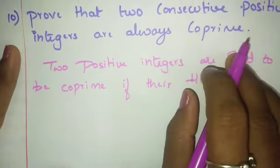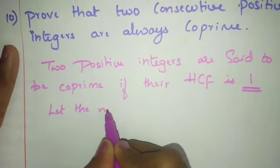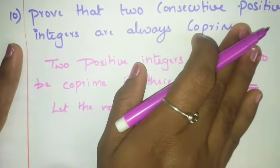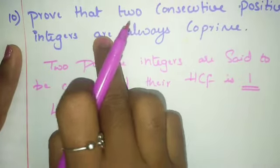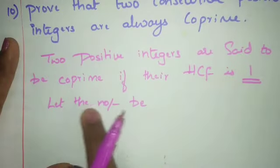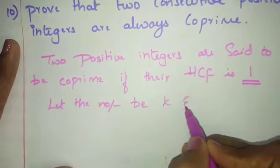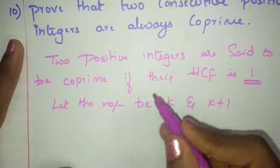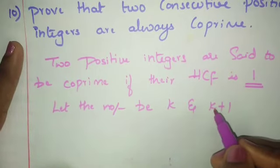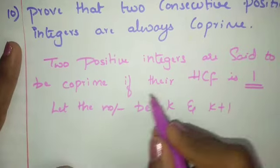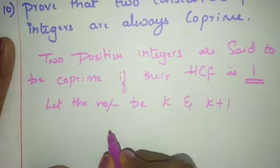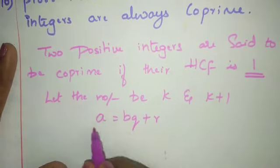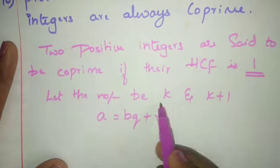Let the two consecutive numbers be k and k+1. In consecutive integers like 1, 2, 3, 4, the next number is always one more. So let k and k+1 be the consecutive integers.